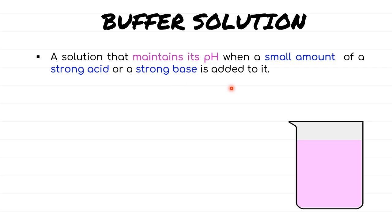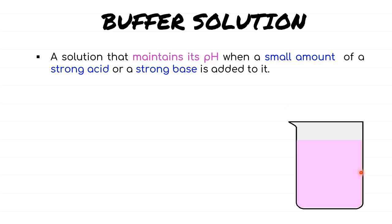Let's illustrate what a buffer solution is by using a diagram. Say we have a beaker containing a solution, and we put some universal indicator in it to see any changes in color when adding acids or bases. The solution now has a neutral pH of around 7. If we add an amount of acid, usually denoted by H⁺, the universal indicator would change the color to red, indicating the solution is acidic. Whereas if an amount of base, usually denoted by OH⁻, is added, the universal indicator would change the color to blue, indicating the solution is basic.